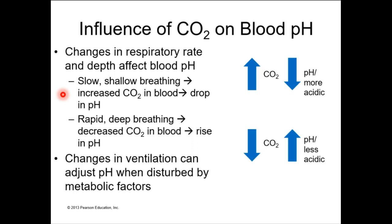If you are not breathing enough — slow, shallow breathing — you're going to increase your load of carbon dioxide in your plasma, which is going to drop your pH. Rapid, deep breathing is going to decrease the amount of CO2 in your plasma and increase your pH, making you more basic. If your nervous system detects that you are acidic, it will try to compensate by breathing more; if it detects alkalinity, it will make you breathe less and retain carbon dioxide.